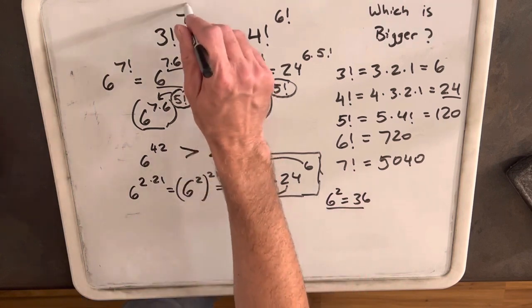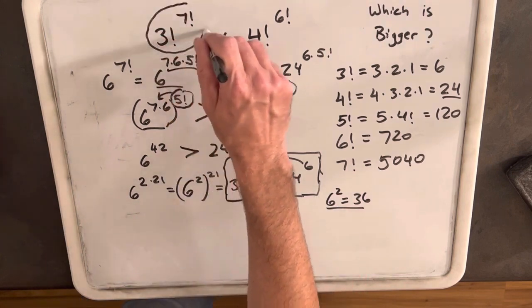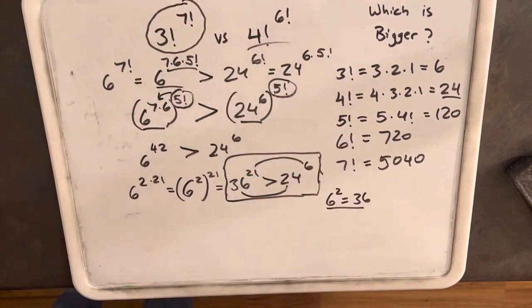And so, that means that this side is correct. 3 factorial to the 7 factorial is greater than 4 factorial to the 6 factorial.